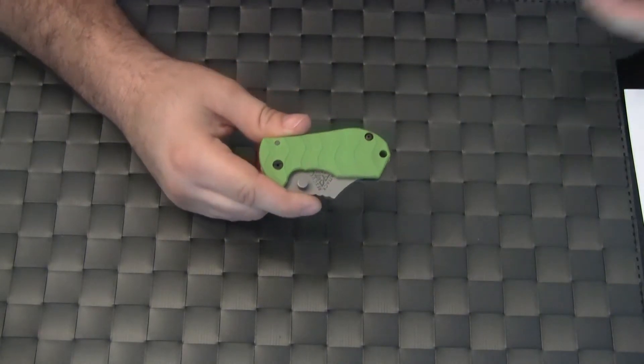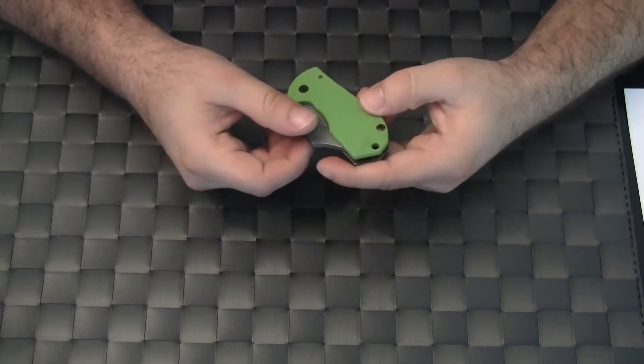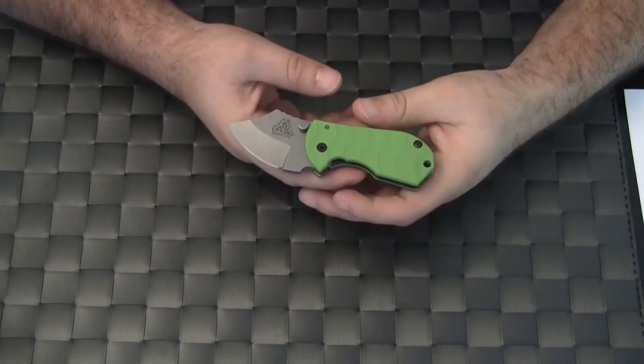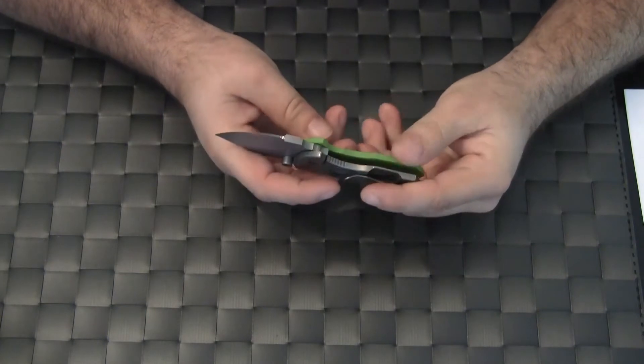ARS Knives is run by Alex Shannara and he makes some fantastic folding, fixed and automatic knives. The Flipshank Folder is a small but overbuilt pocket folder with a titanium frame lock.